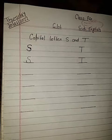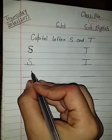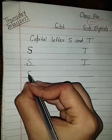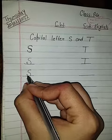This is how to write S. First, we will make S by making a half small circle and again, half a small circle. This is S.